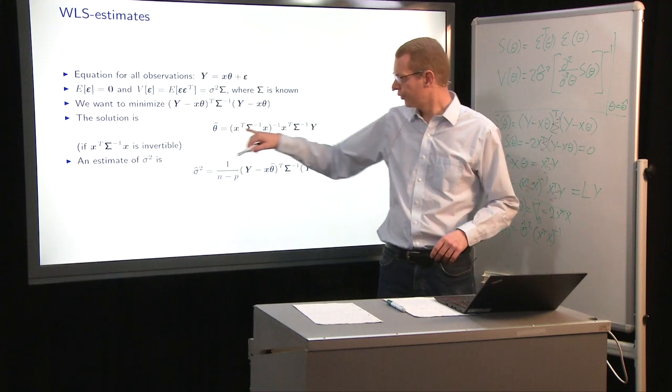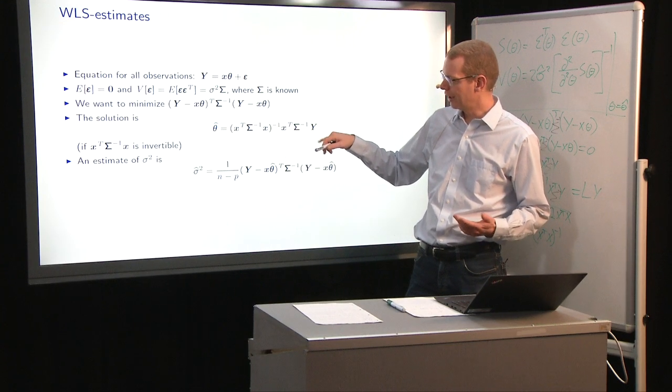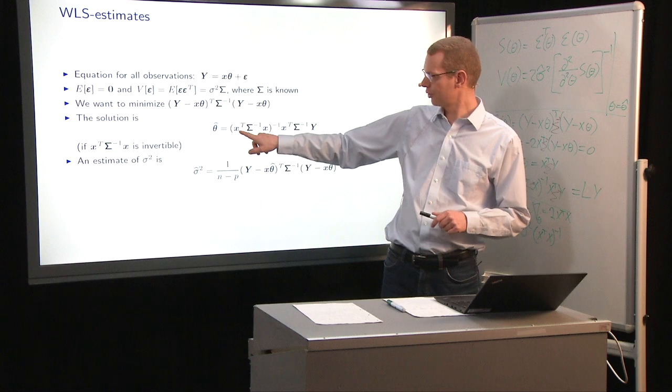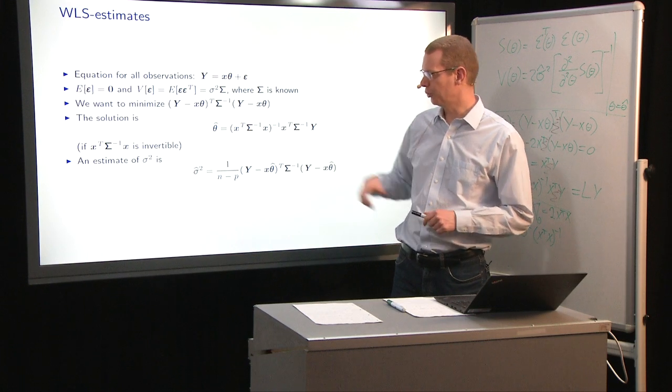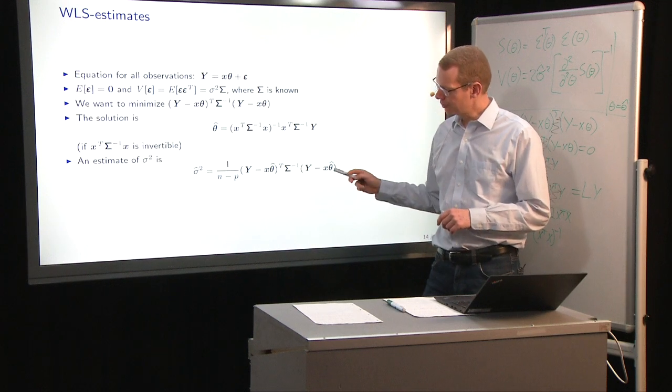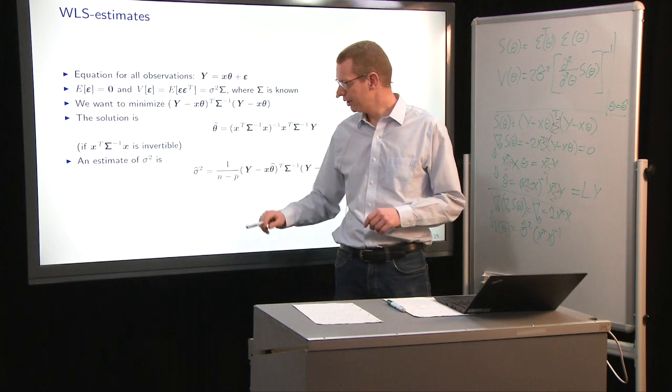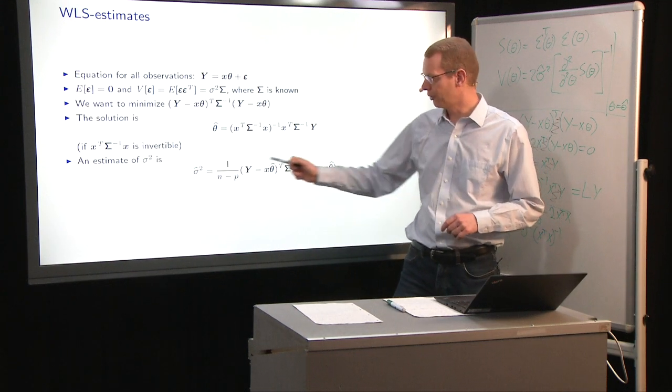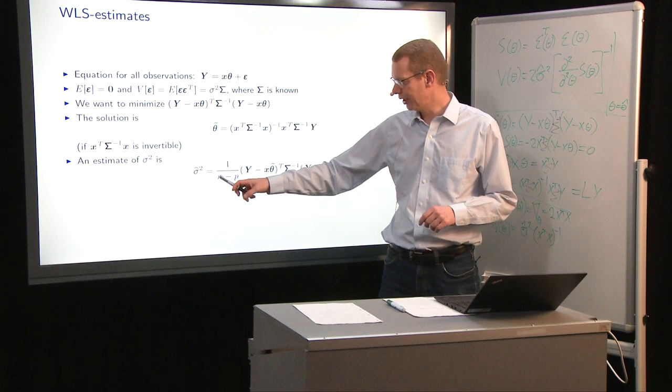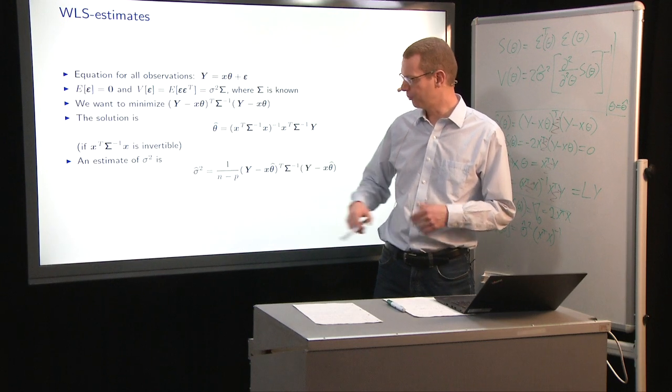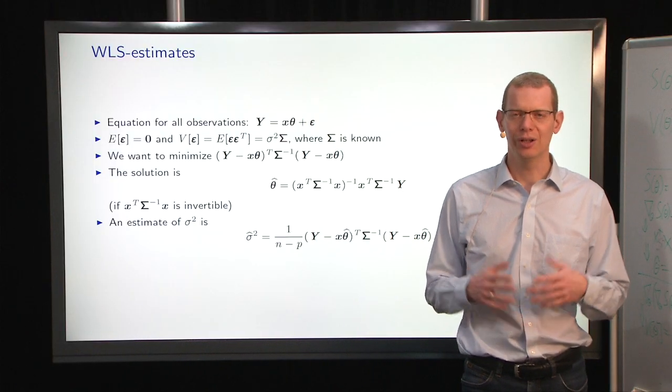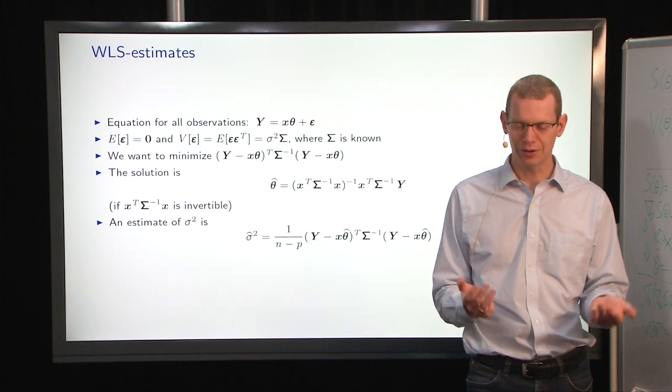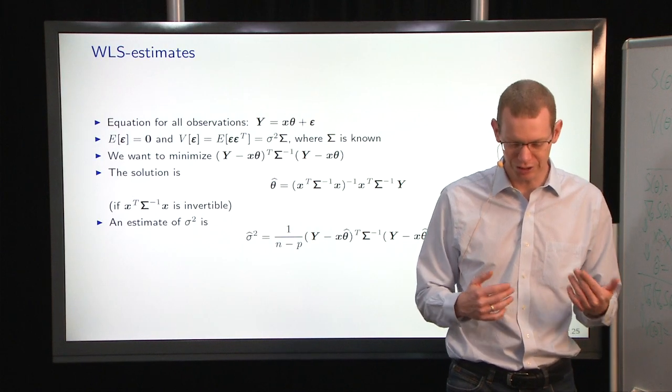So the structure for the estimator is the same. And again, of course, we're conditioning on X transpose sigma inverse X transpose X, that this is invertible. And an estimator of sigma here is very similar to what we did before. Again, we divide by n minus p, where p is the number of parameters that we estimated. So that was how to do the weighted least squares as an extension of the ordinary least squares.